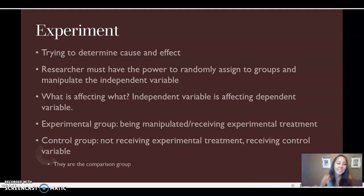The last type is an experiment. An experiment is where you are trying to determine cause and effect. Now, there are two things that I, as the researcher, must have the power to do for this to be a true experiment. One, I have to have the power to randomly assign my participants into groups. And two, I have to have the power to manipulate my independent variable. So, what do I mean by this?